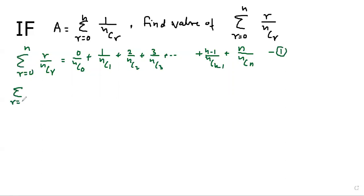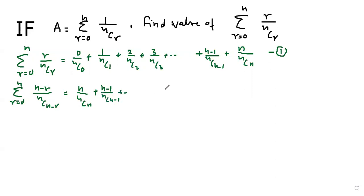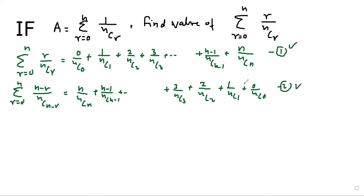Now I will write a second formula by replacing r with n minus r. This gives: n upon nCn, then (n-1) upon nC(n-1), likewise 3 upon nC3, plus 2 upon nC2, plus 1 upon nC1, plus 0 upon nC0. This is equation number 2.